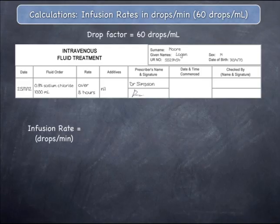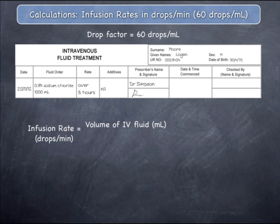The formula to calculate the infusion rate in drops per minute, if the drop factor is 60 drops per mil, is the volume of IV fluid that the patient must receive, expressed in mils, divided by the time over which the infusion must run. This is called the rate and will be expressed in hours or minutes.